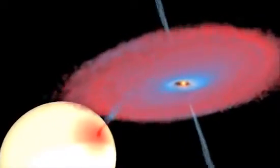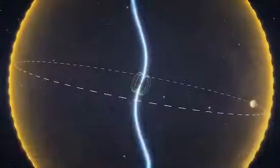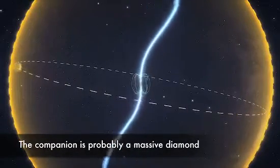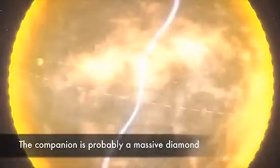The evolutionary history and amazing density of the planet all suggest that it is comprised of carbon, i.e. a massive diamond orbiting a neutron star every two hours in an orbit so tight it would fit inside our own sun.